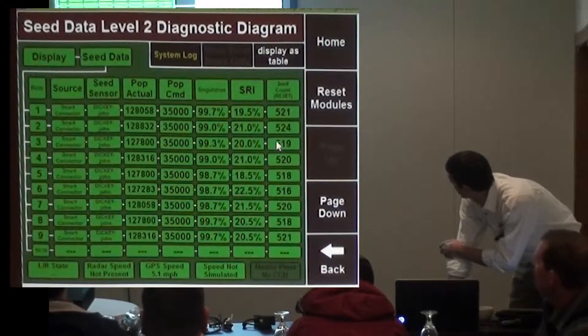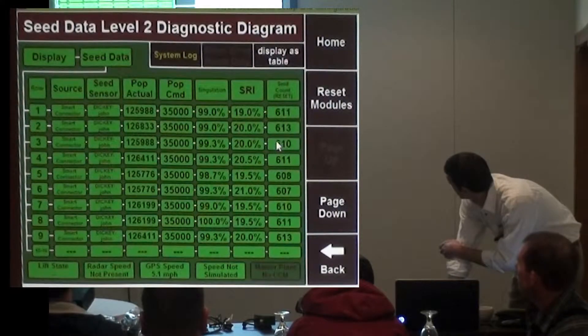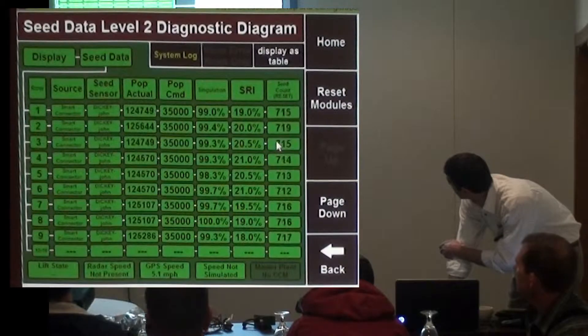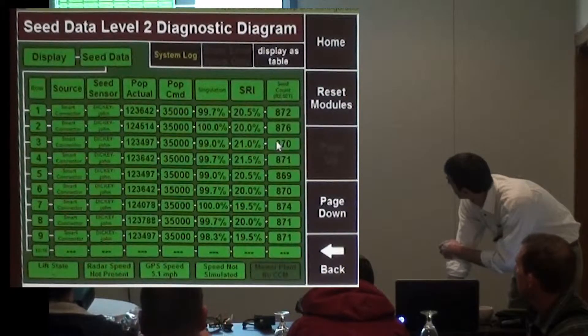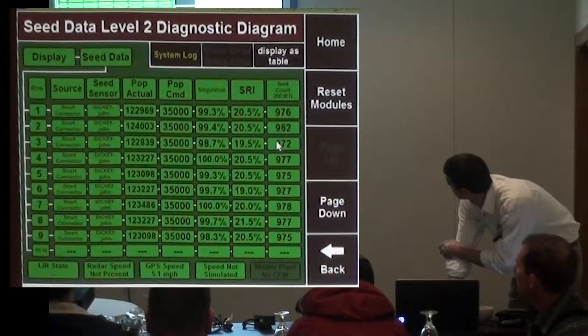It's a handy way for diagnosing because you can see exactly how many seeds that sensor's seeing paired with the other sensors next to it. If you're on hydraulic motors, you can spin your motors and see the seeds dropping.